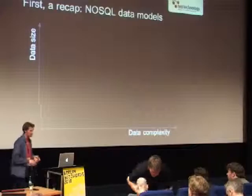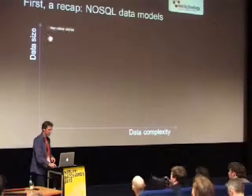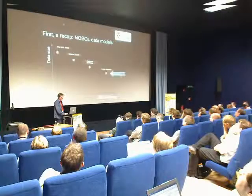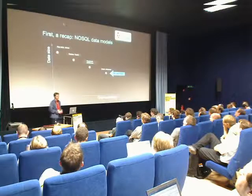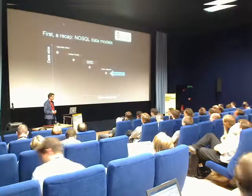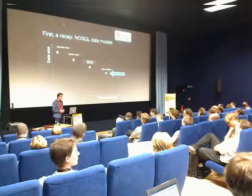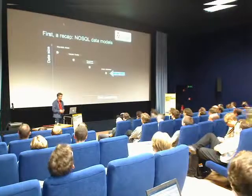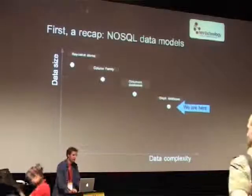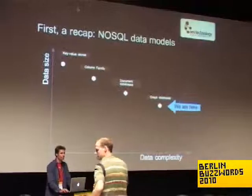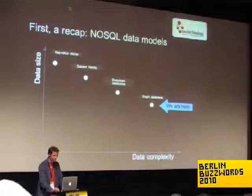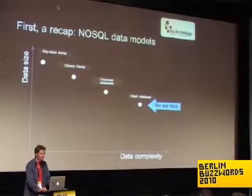A recap of the NoSQL data models: we have heard about them. We have the key-value stores, the column families, the document databases, and the graph databases. There are a couple of them; they've been around for quite a long time but not worked with that much. The main scalability issues for people are failover and replication instead of sharding, and we're seeing the same thing from projects using graph databases.